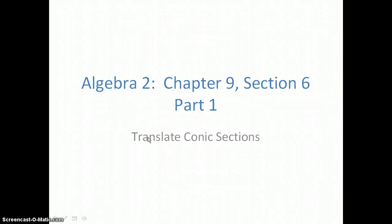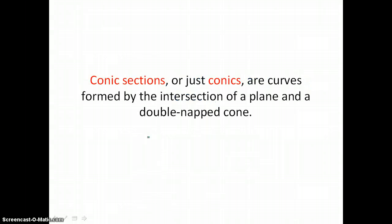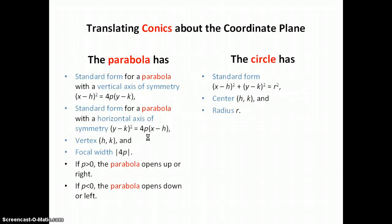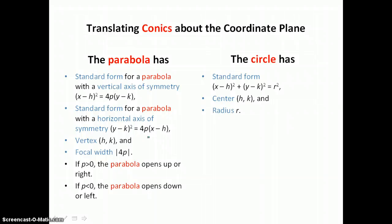In section 9.6, part 1, you will translate conic sections. Conic sections, or just conics, are curves formed by the intersection of a plane and a double-nappe cone. Here are two of the conic sections, the parabola and the circle, and the standard form for these conics is listed.